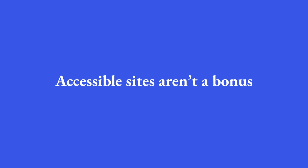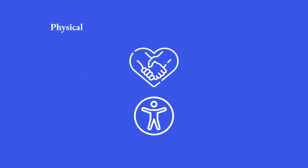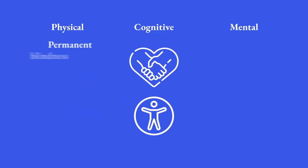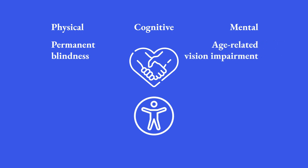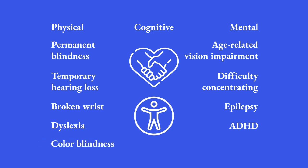The takeaway is that accessible sites aren't a bonus — they're essential for so many of us. The range of disabilities is as diverse as humanity, covering everything from physical to cognitive to mental. Permanent blindness to age-related vision impairment. Temporary hearing loss to difficulty concentrating. Broken wrist to epilepsy. Dyslexia to ADHD. Color blindness to multiple sclerosis. And the list can go on.